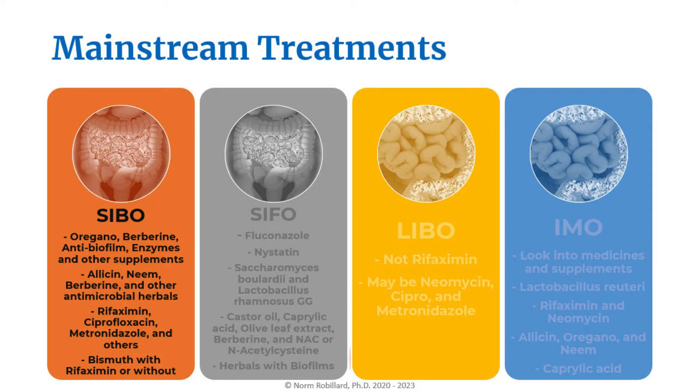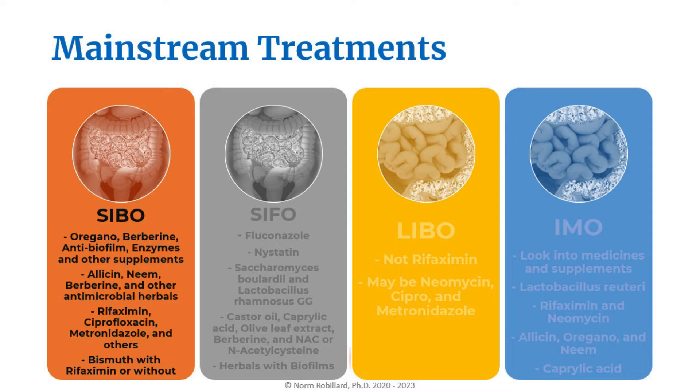Now let's look at mainstream treatment options for each form of dysbiosis. For hydrogen-predominant SIBO, herbal protocols include one from the University of Pittsburgh and Johns Hopkins using a combination of oil of oregano, berberine, antibiofilm enzymes, and other supplements. Combinations of allicin, neem, berberine, and other antimicrobial herbals are also used, though there's a distinct lack of published studies. Pharmaceutical antibiotics for SIBO include rifaximin as well as systemic antibiotics such as ciprofloxacin and metronidazole. Rifaximin is popular because it's a broad-spectrum antibiotic that's less toxic as it's not absorbed into systemic circulation, and it's FDA-approved for IBS-D, a SIBO-related condition.